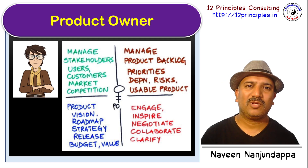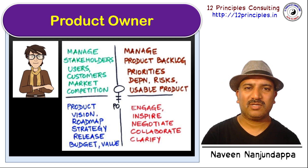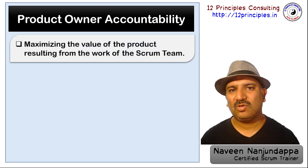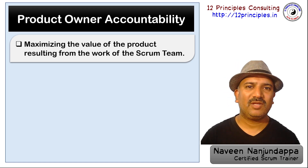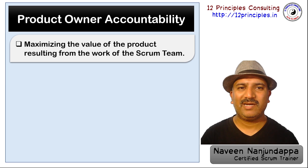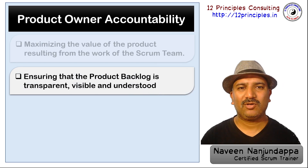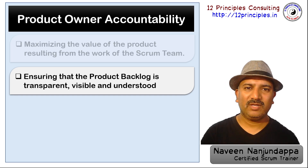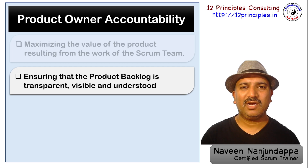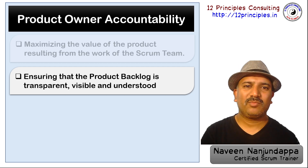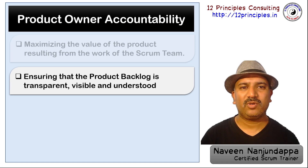Now let us look at the responsibilities and accountabilities of a product owner in a sprint. In Scrum, the product owner is accountable for maximizing the value of the work, which means building a winning product with the help of the Scrum team. Ensuring that the product backlog is transparent, visible, and well understood by everybody in the team helps communicate their needs, wants, and objectives to focus towards the goal, and is an essential part of working in a complex zone which helps with inspection and adaptation.